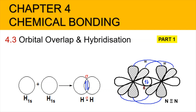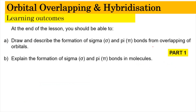Hi, assalamualaikum and a very good morning. We are now in Chapter 4, Chemical Bonding, specifically subtopic 4.3: Orbital Overlap and Hybridization, Part 1 of the video. In this video we're going to learn about the drawing and description for the formation of sigma and pi bonds from the overlapping of orbitals, and explain the formation of sigma and pi bonds that exist in molecules. Learning outcomes A and B will be covered in this part one.